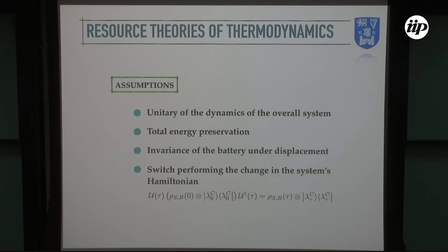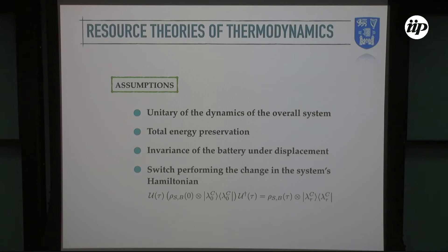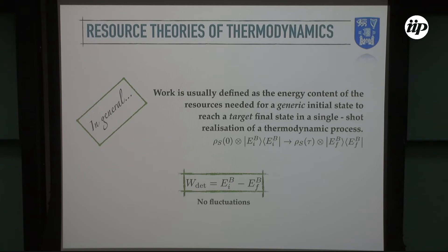The assumptions of the game are the following: we require a unitary dynamics of the overall system; we also require that the total energy is preserved at the microscopic level; we require that the battery is invariant under displacement; and finally we require that the switch actually performs the desired change in the system Hamiltonian. Originally in resource theory, work was defined in a very different way with respect to how Crooks and Jarzynski defined it — defined in terms of the energy content of the resources, in this case the battery, needed to allow this transformation. So it's a deterministic quantity which allows this single-shot transformation from the initial state with this ancillary state to the final one.